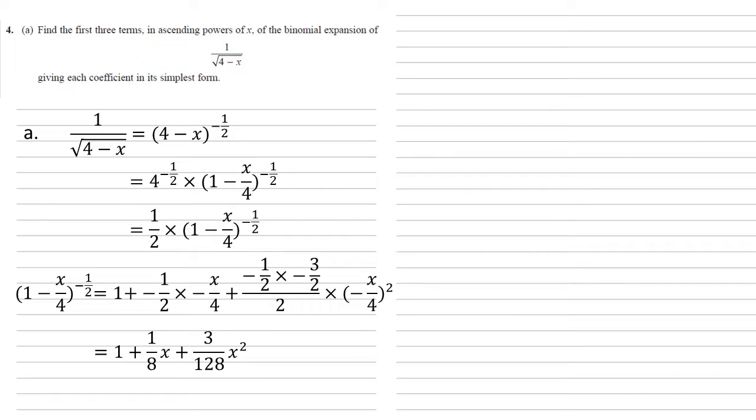Simplifying this, we get 1 plus an eighth x plus 3 over 128 times x squared. But remember that our original expression had a half in it, so we need to multiply this through by a half. So we get a half plus a 16th x plus 3 over 256 times x squared.